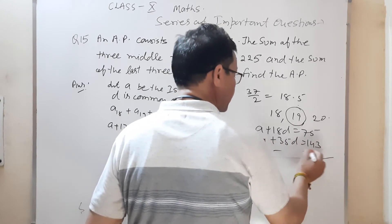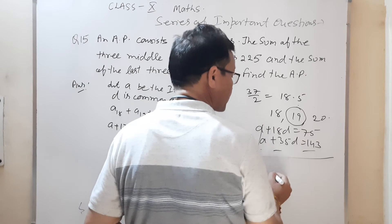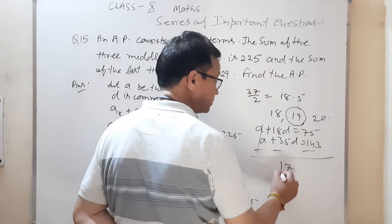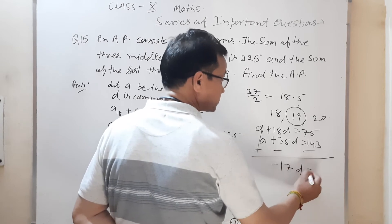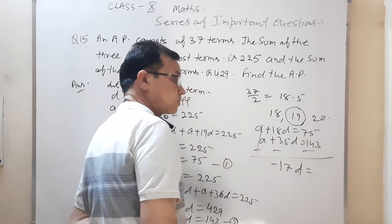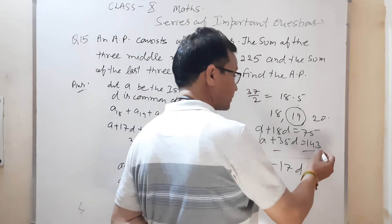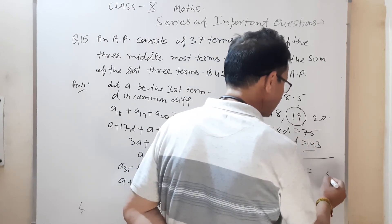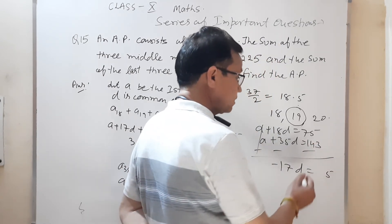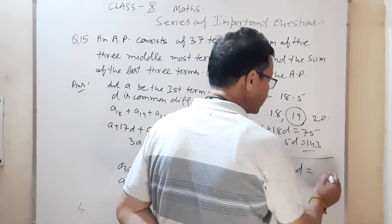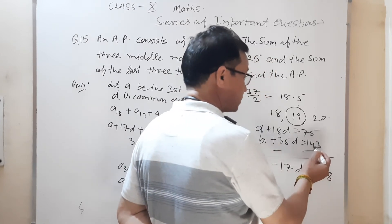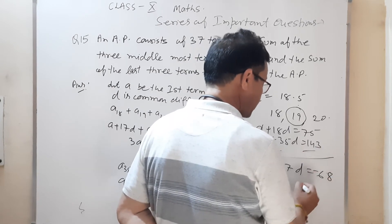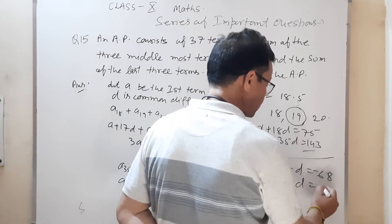Minus करो — a cancel होगा। 35d − 18d = 17d। 143 − 75 = 68। तो 17d = 68, इसलिए d = 4।